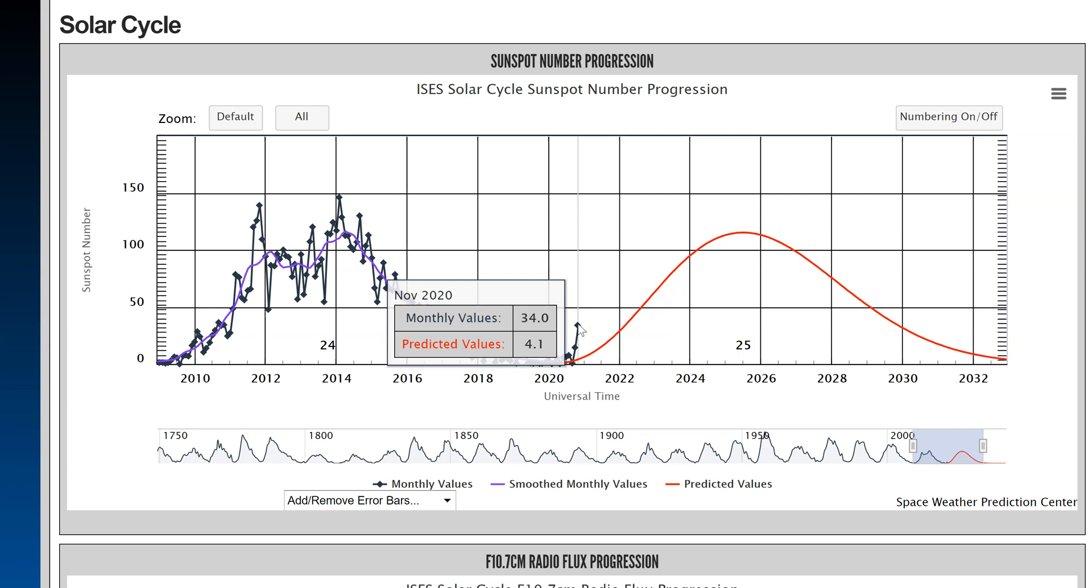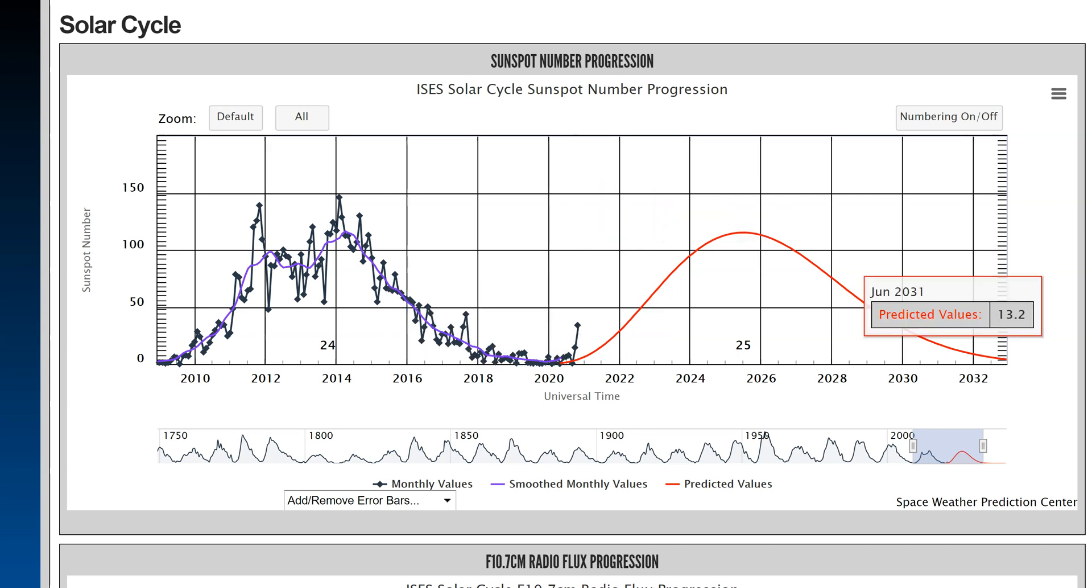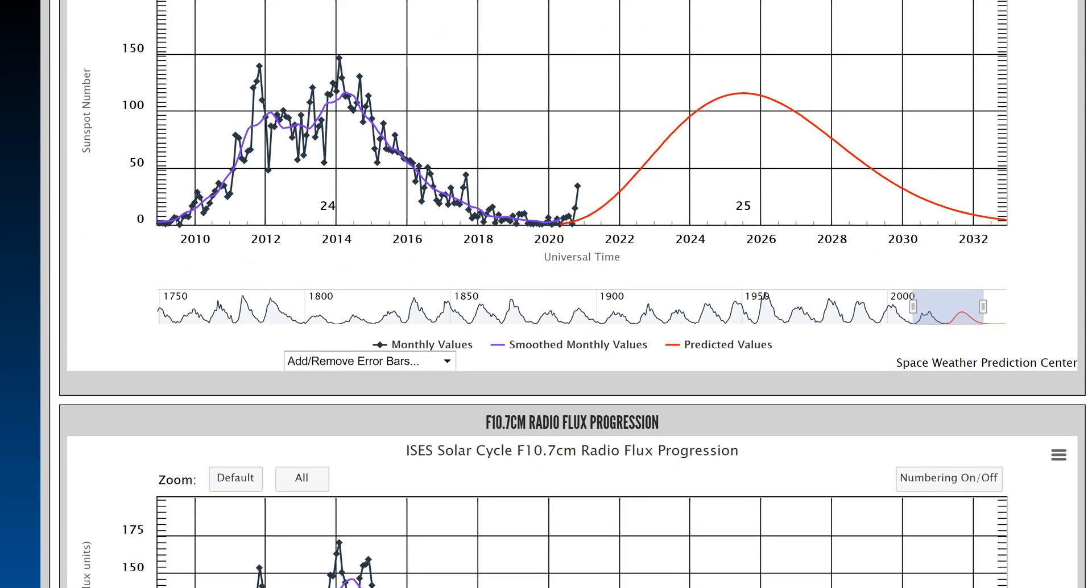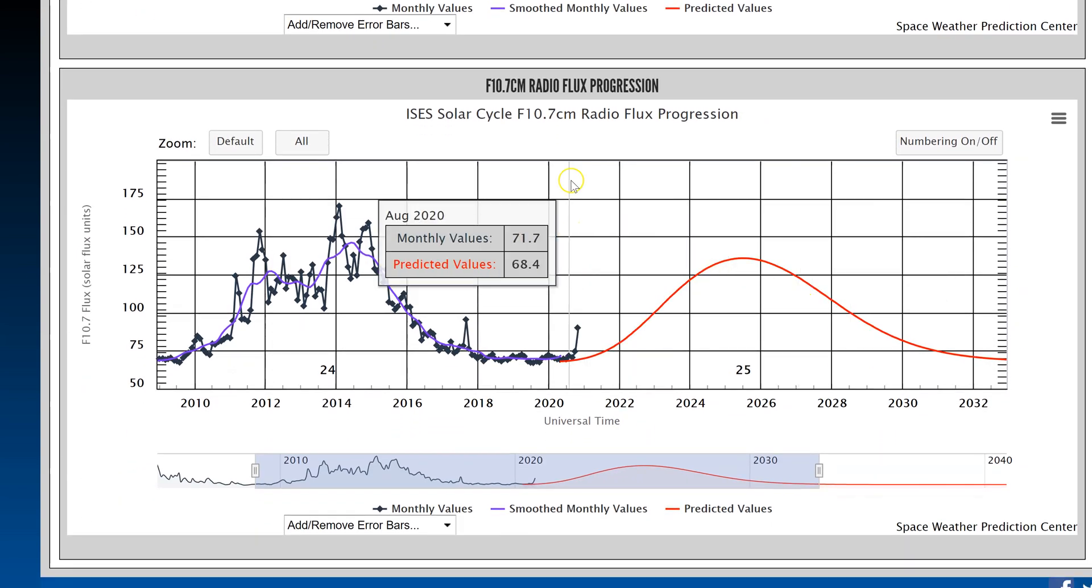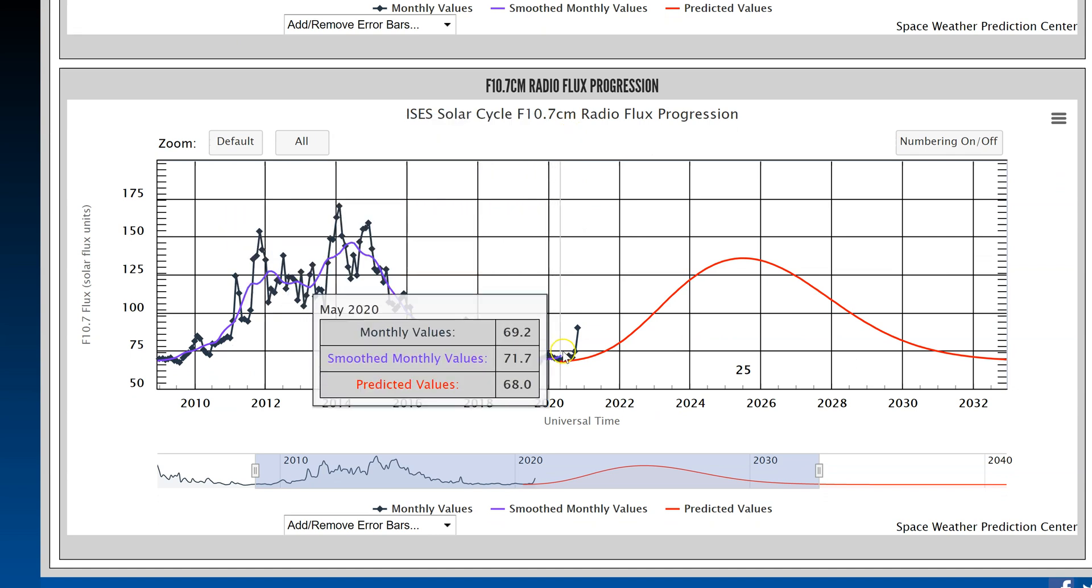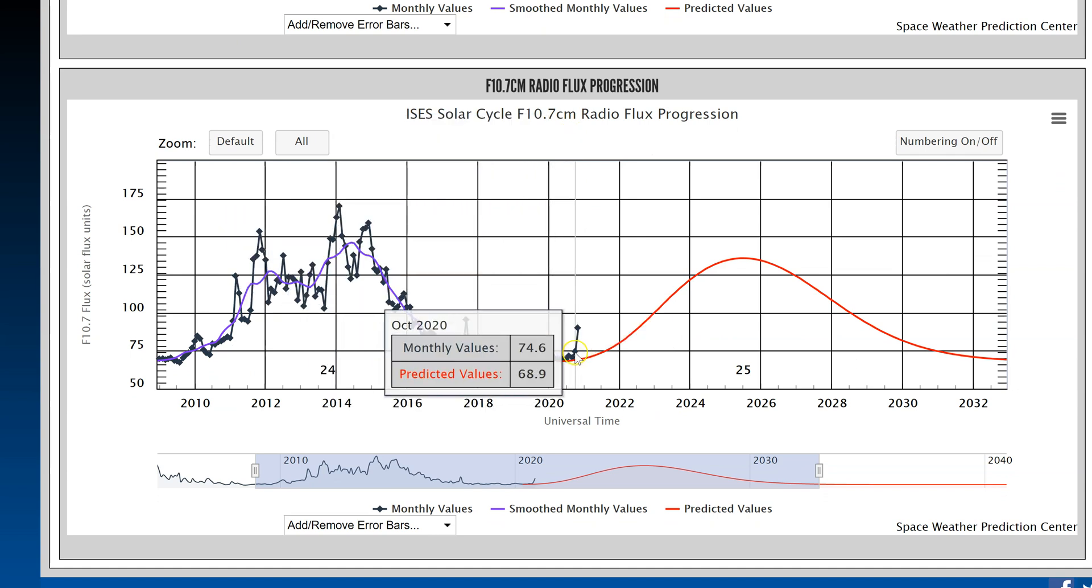And in November the monthly values were 34 for sunspot cycle progression. And if you head on down to radio flux, you can see that the predicted number for October was 68.9 for the solar flux radio flux, and it was 74.6. And the predicted value for November was 69, and the monthly values was 90. So December is definitely going to be off the charts with all the sunspots they got on the sun right now, and so it's exciting.